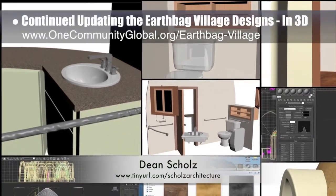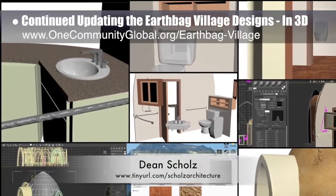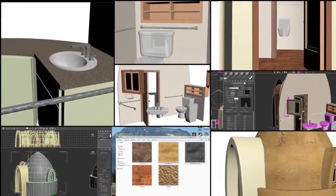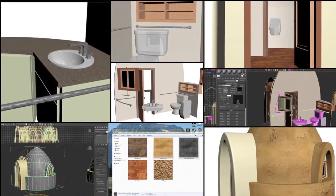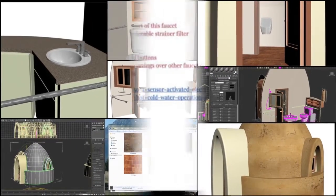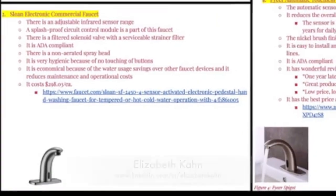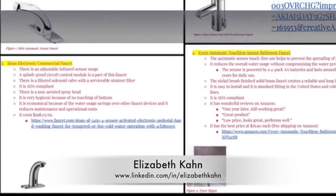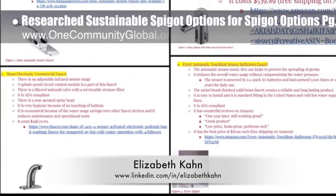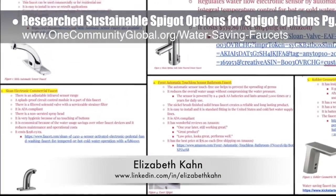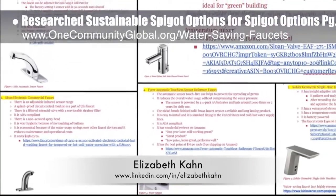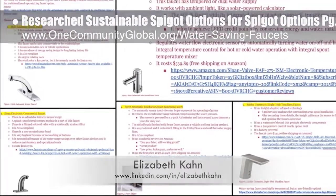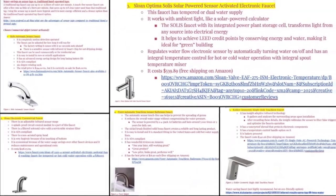Dean Schultz, architectural designer, continued working on the earthbag village — weekly update 149. This week's focus was finishing details for most of the internal furniture and starting to test textures. Elizabeth Kahn, environmental consultant, completed her eighth week as a researcher with our team. This week she began researching sustainable spigot options for the most sustainable spigot options page we're developing. You can see some of this work in progress here.